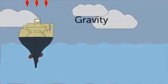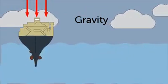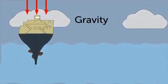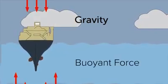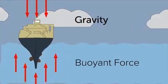When a ship is in the ocean, gravity is a constant downward force on the ship. But the water that the ship is in has a constant upward force on the ship called buoyant force.